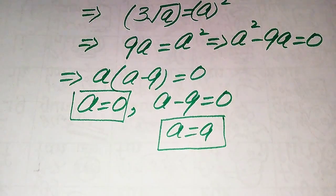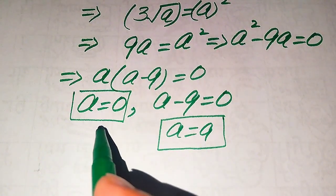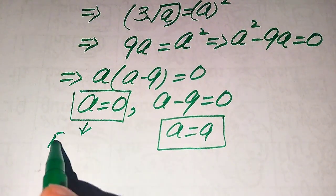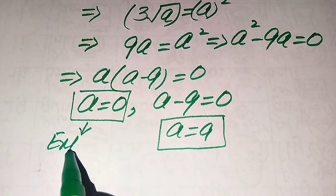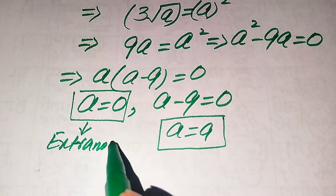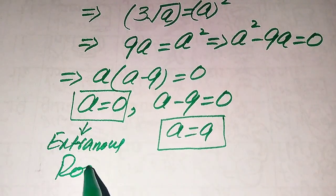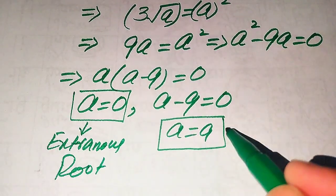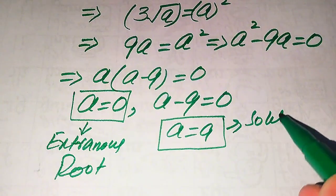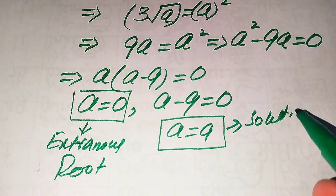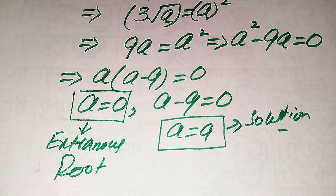From Method 1 we already verified that a = 0 is an extraneous root because it does not satisfy the original equation, and a = 9 is the solution because it does satisfy the equation. So a = 9 is the final answer. Thank you so much for watching this video — please subscribe to my channel for more exciting videos.